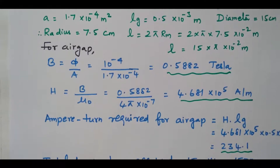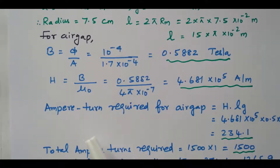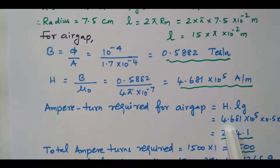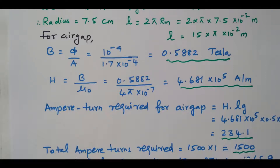Now we will find the ampere turns for the air gap: NI (air gap) = H × Lg. H is 4.681 × 10⁵, and the length of the air gap is 0.5 mm = 0.5 × 10⁻³ m. After simplification we get 234.1. The ampere turns required for the air gap is 234.1.